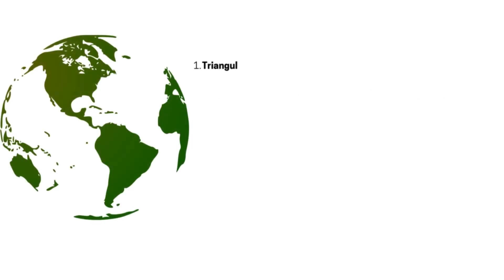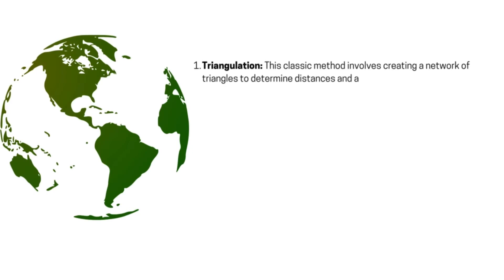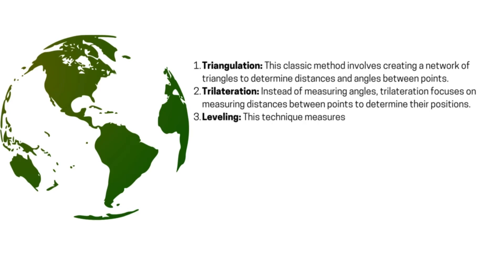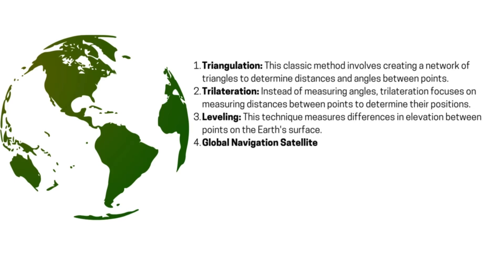Key techniques in geodetic surveying: 1. Triangulation — This classic method involves creating a network of triangles to determine distances and angles between points. 2. Trilateration — Instead of measuring angles, trilateration focuses on measuring distances between points to determine their positions. 3. Leveling — This technique measures differences in elevation between points on the Earth's surface. 4. Global Navigation Satellite Systems (GNSS) — Systems like GPS, GLONASS, and GALILEO provide precise positioning data.